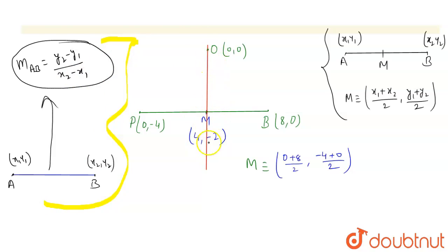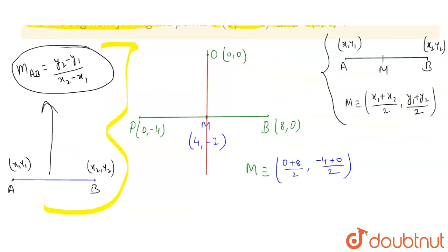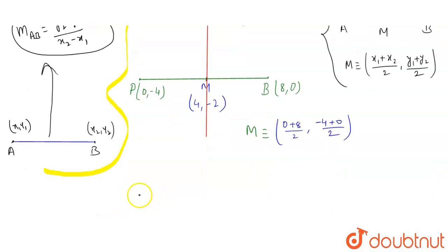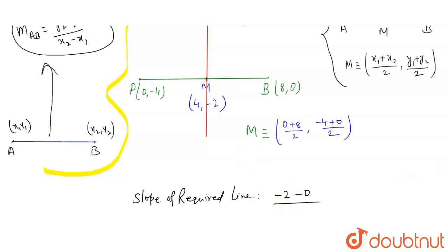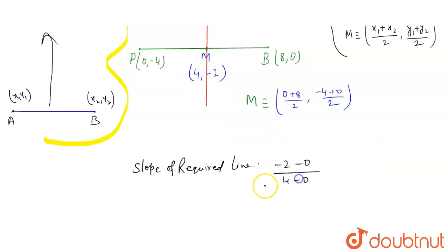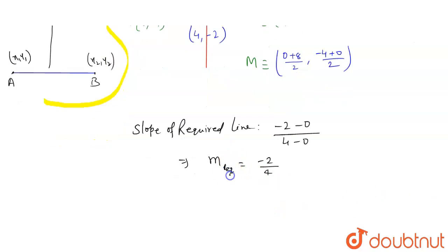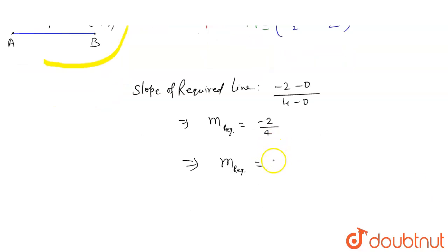We know there are two points on this line: (4, -2) and (0, 0). Let (4, -2) be (x1, y1) and (0, 0) be (x2, y2). Then the slope of the required line = (y2 - y1) / (x2 - x1) = (-2 - 0) / (4 - 0) = -2/4 = -1/2. So the slope of the required line is -1/2, and this is our final answer.